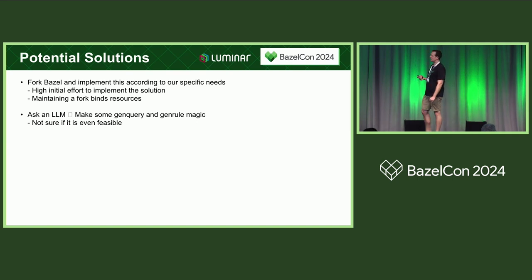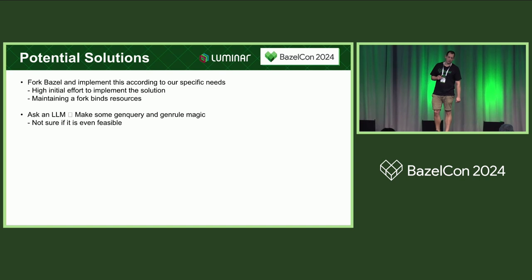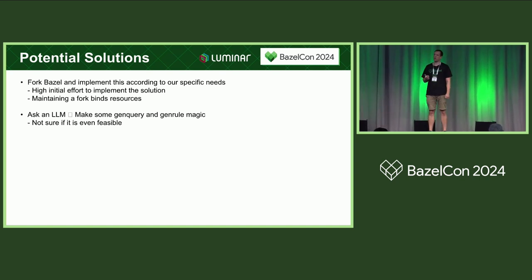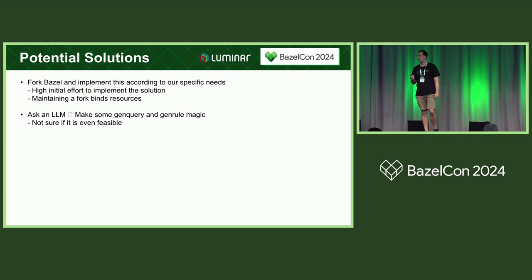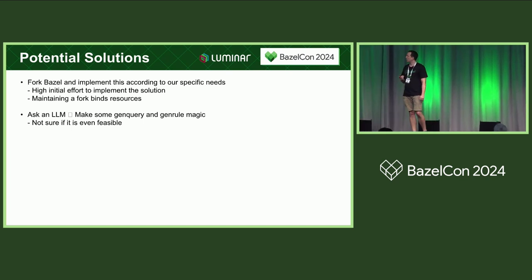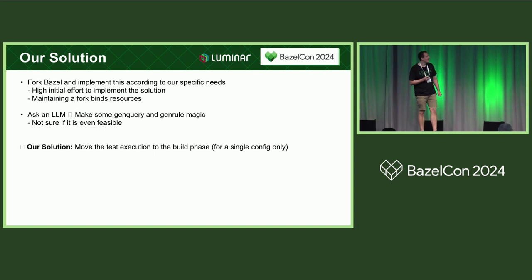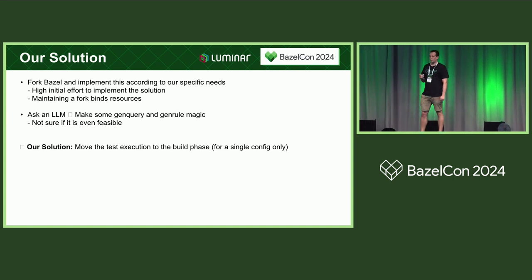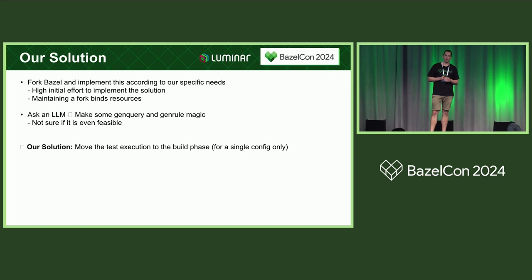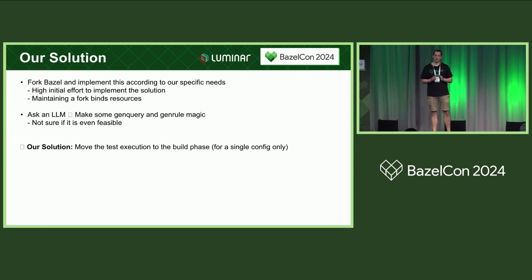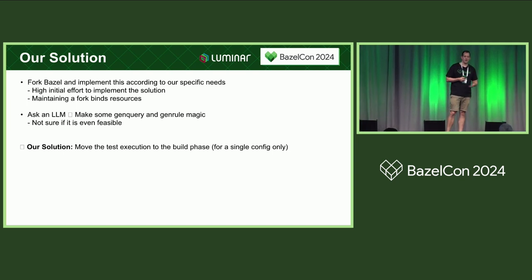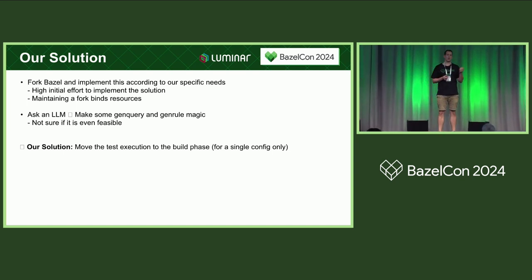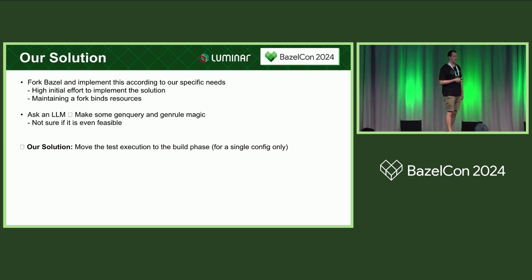What we actually did — as the best compromise we could come up with — was to simply move the test execution to a point where we can already depend on the output, which is Bazel build. Now, please, before you complain, let me explain. We only do this for a certain config. We don't want to change the entire behavior of Bazel and run all tests as part of Bazel build. We want to stick to the default behavior, but we have a specific config where we run the tests already as part of Bazel build. With that, you get everything you get from Bazel build — a target where you can depend on the output and do all the things we want.